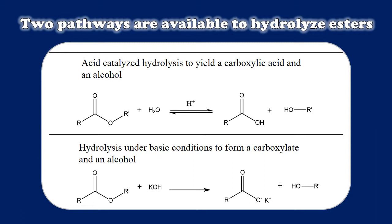It turns out there's actually a much better way to do this in most cases, and that's using hydrolysis under basic conditions, which allows us to form a carboxylate salt and an alcohol. You should be able to work out the mechanism for this reaction yourself, and when you do, you'll realize that the final step of the process is irreversible — which means that as long as we have enough base present, we can 100% quantitatively hydrolyze an ester to form the carboxylate salt and alcohol. This is one of the reasons why the hydrolysis of an ester under basic conditions, or saponification, is one of the earliest known chemical reactions used by society.